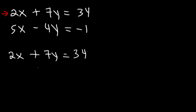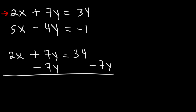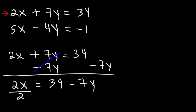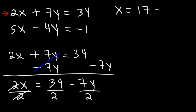Subtract both sides by 7y: we get 2x is equal to 34 minus 7y. Now divide both sides by 2: x is equal to 17 minus 7 over 2 times y.